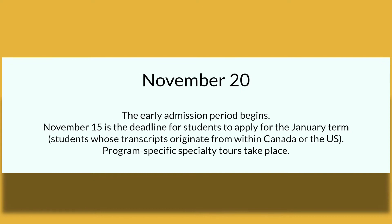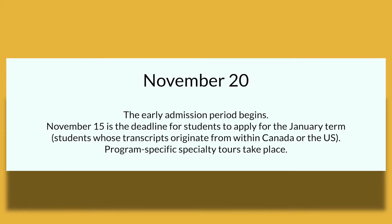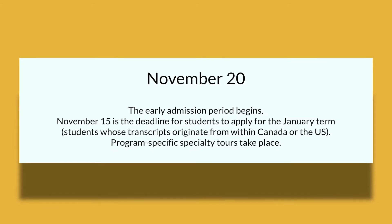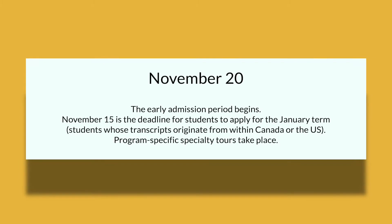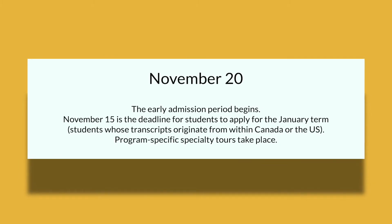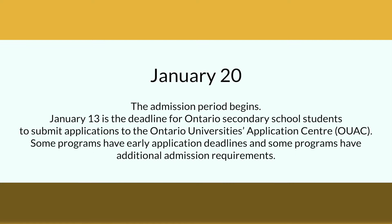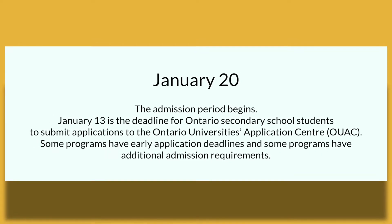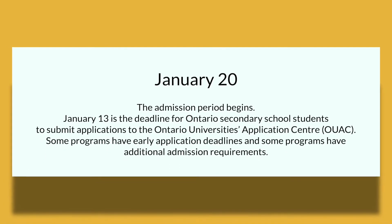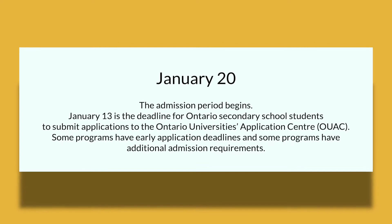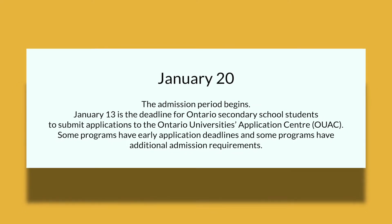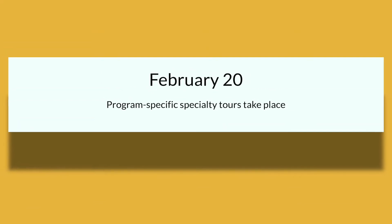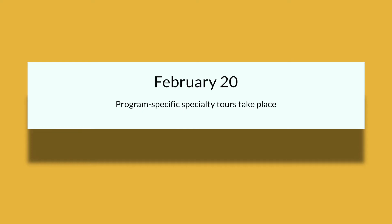November 15th is the deadline for students to apply for the January term — students whose transcripts originate from within Canada or the US. Program specific specialty tours will also take place on this date. January 20th is when the admission period begins. January 13th is the deadline for Ontario secondary school students to submit applications to the Ontario University's Application Center. Some programs have early application deadlines and additional admission requirements. January 20th is also the program specific specialty tours day.